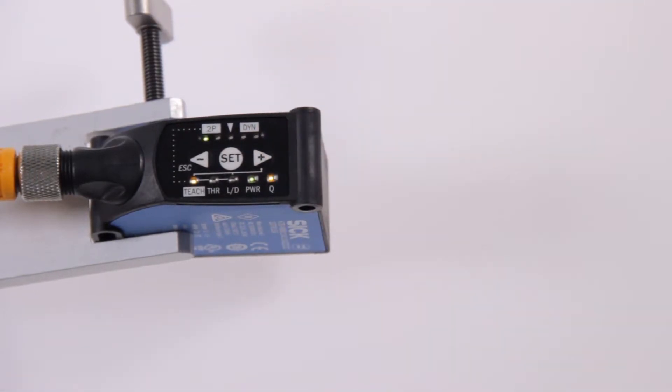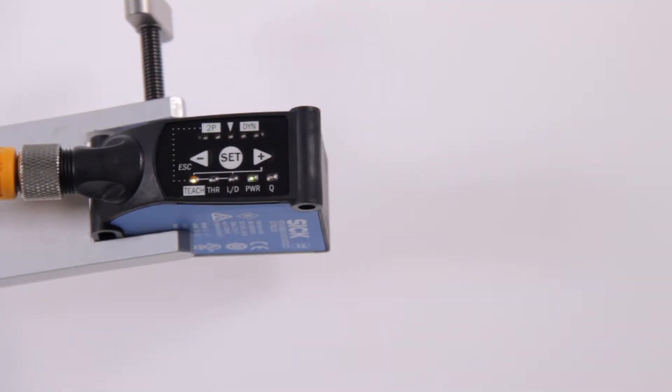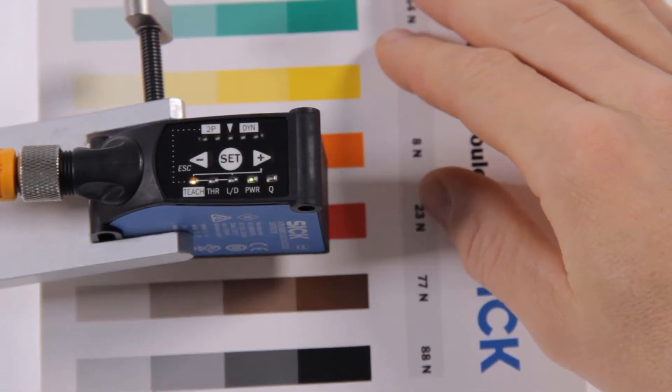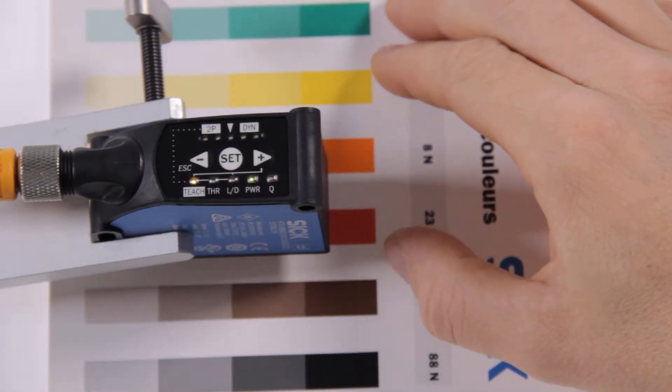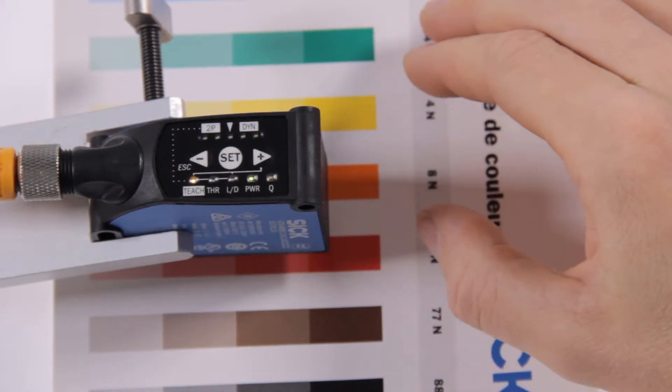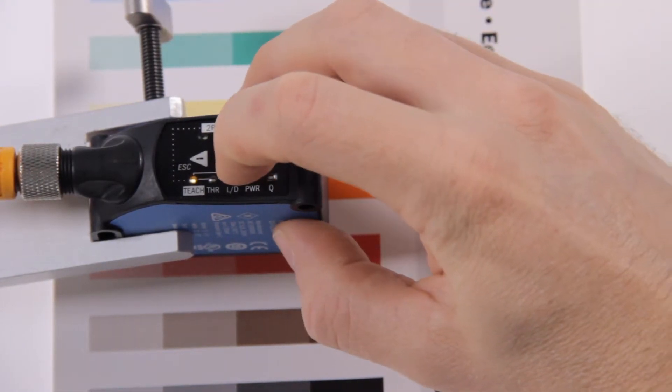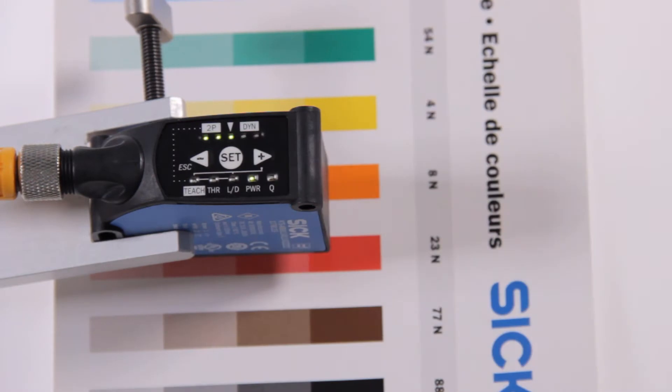The first green LED blinks. Place the print mark under the light spot and press SET. Now the second LED blinks, indicating that the second teach point is required. Move the background under the light spot and press SET. The teach-in procedure is done.